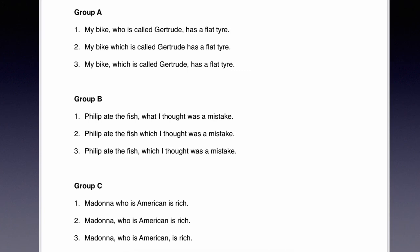B, three: 'Phillip ate the fish, which I thought was a mistake.' What was it that I thought was a mistake? Well, the whole fact that he ate the fish — it wasn't just the fish, it was the whole thing. This is called a comment clause, and it's a comment on the whole sentence: 'Phillip ate the fish.' A comment clause always has a comma, and then the relative pronoun 'which.' The 'which' doesn't refer to just one noun — it refers to the whole clause.